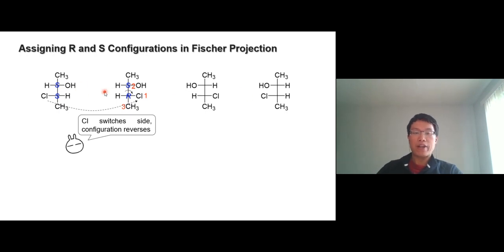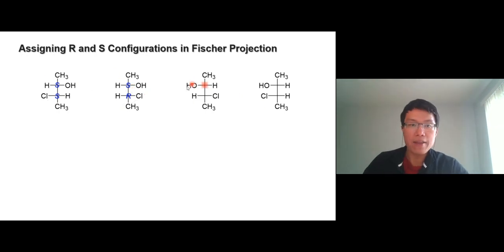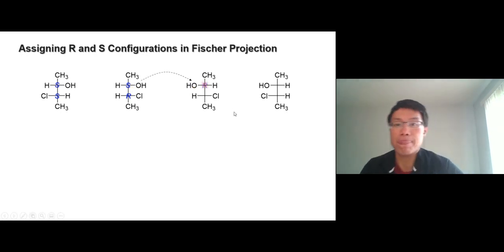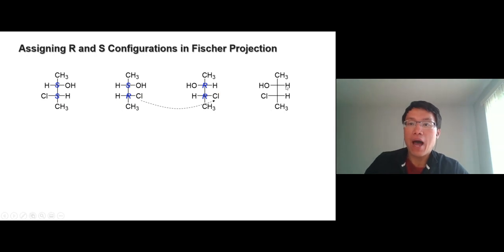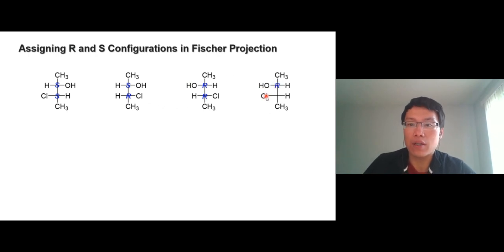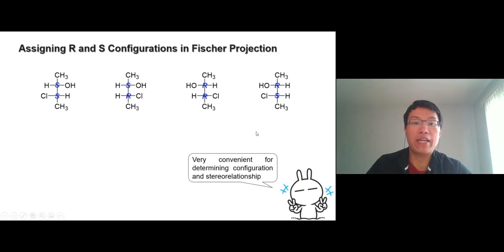No more full configuration work — you can just look left and right. Compare the configuration on the left of all these molecules. For the OH carbon: OH always on the right is S; OH always on the left is R. For the chlorine chiral center: chlorine on the same side — if it's R it's going to be R. Last chiral center: always on the left is R; chlorine on the left gives S. Super simple and very convenient.